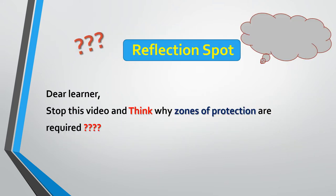Stop this video and think: why are zones of protection required? A protection zone is the area covered by a single protection system, meaning we need to give protection to each element of the power system — generator, transformer, transmission line, and distribution. The protection provided for a particular generator covers only that generator.